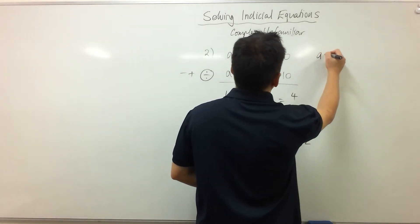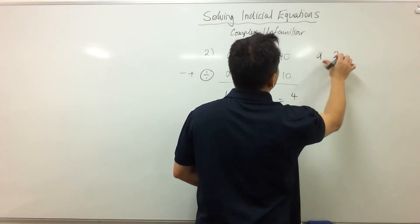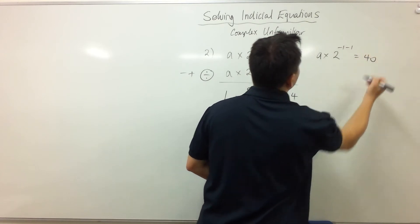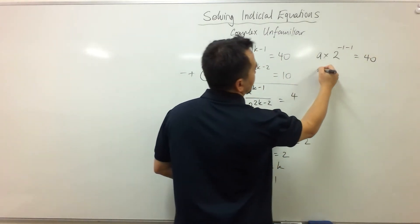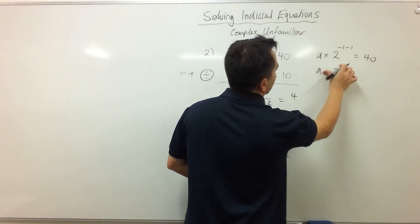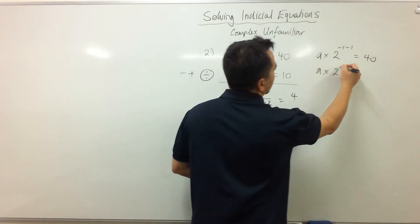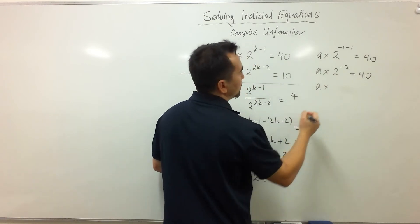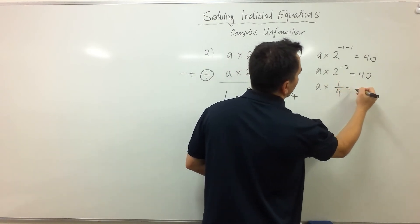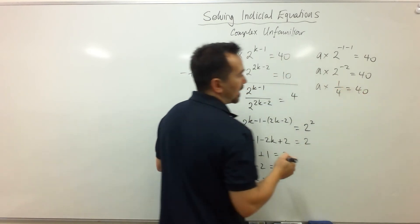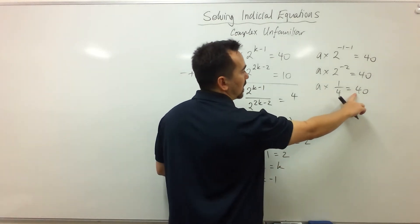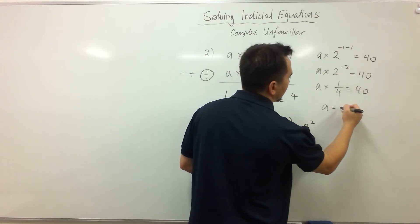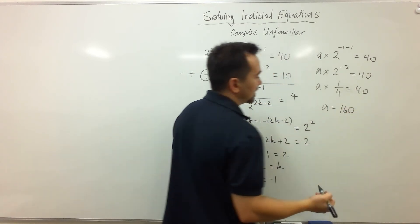So a times 2 to the power negative 1 take 1 is equal to 40, and that means a times 2 to the power negative 2 is equal to 40. a times 1 over 4 is equal to 40, and moving the 4 up, in other words, multiplying both sides by 4, we get a is 160.